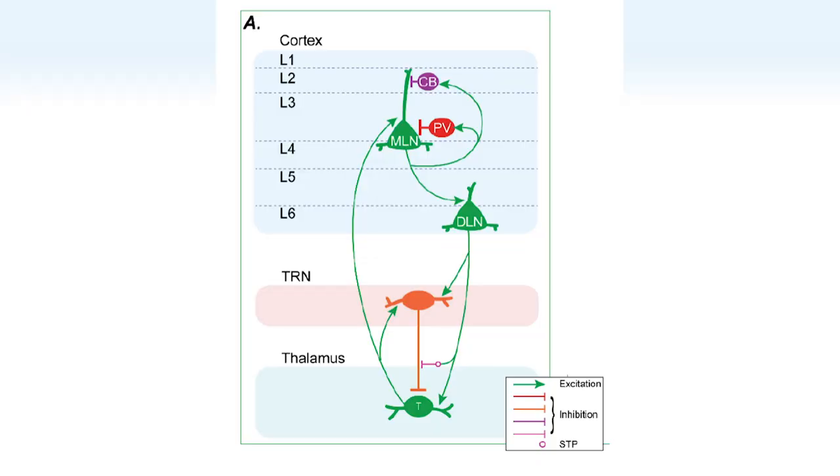We call it a circuit motif. Schizophrenia is a very complicated disorder and no one has really found a definitive cause or even a definitive correlate. But in recent years, one line of research experimentalists have uncovered is dysfunctional inhibition. There's local inhibition in the cortex tamping things down, and then there's the TRN itself, which has been linked with schizophrenia. So we thought, let's look at this circuit and see what it can do and what can go wrong.